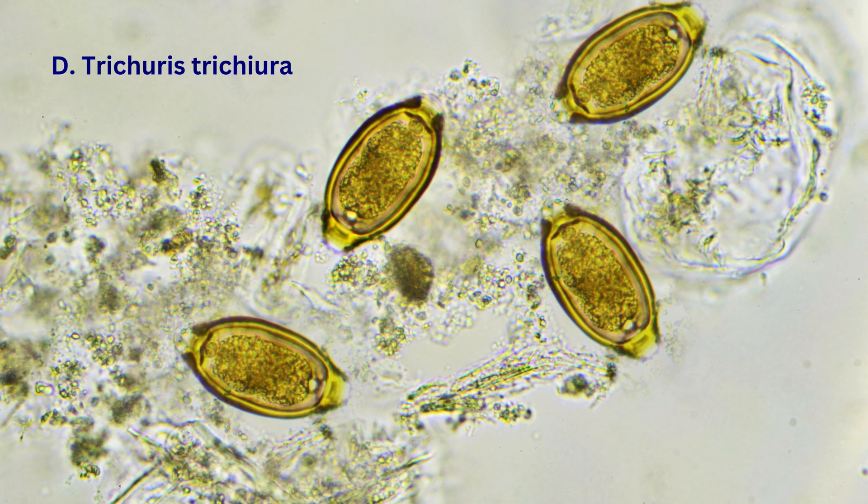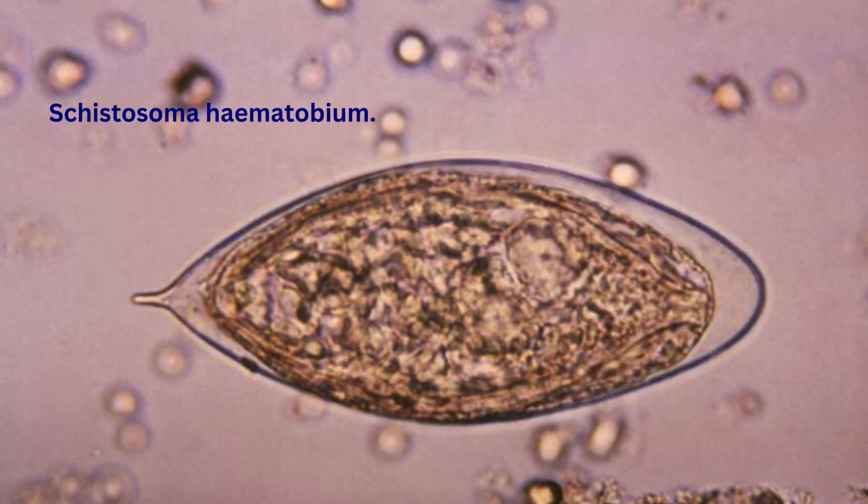D. Trichuris trichiura, the whipworm, is an intestinal parasite. Its eggs are only passed in feces, never in urine. So remember: if you're looking at urinary sediment and spot parasite eggs, your top suspect is Schistosoma hematobium.